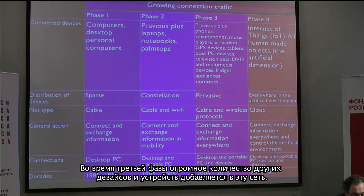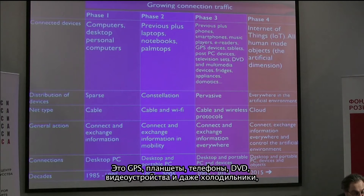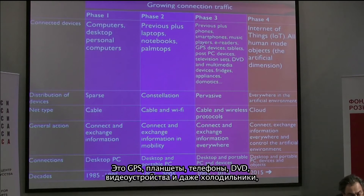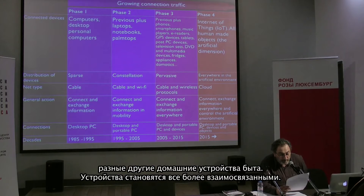In the third phase — the present one — networks are expanded to include mobile connections and many devices are added: phones, smartphones, music players, e-readers, GPS devices, tablets, and some appliances like television sets, DVD and multimedia devices, fridges, while domotics is on the way. This process is accelerating, involving increasingly connected devices. The net is becoming the cloud, with data and calculation operated over a dispersed architecture. This is the phase of connecting and exchanging information everywhere.